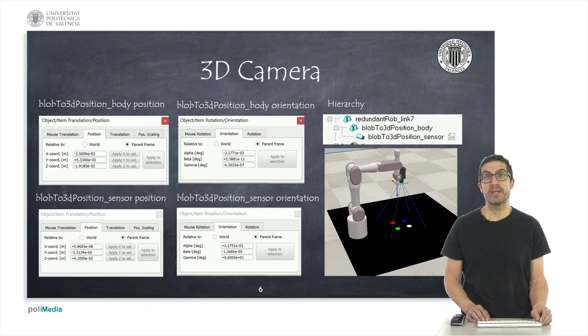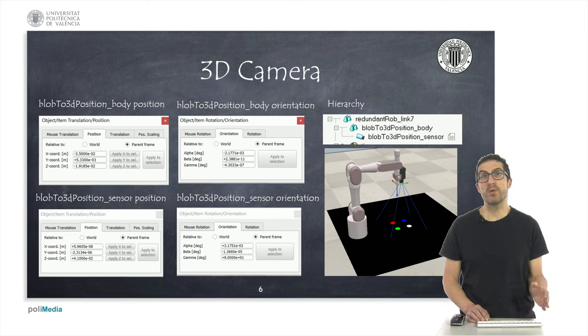Then we are going to make the Blob to 3D position sensor object child of the Blob to 3D position body object. And this will also be a child of the last link of the robot. Note that the original 3D camera model includes also a dynamic object that is part of the camera. We must remove this object because our simulation is a pure kinematic simulation, so we don't use dynamic objects.